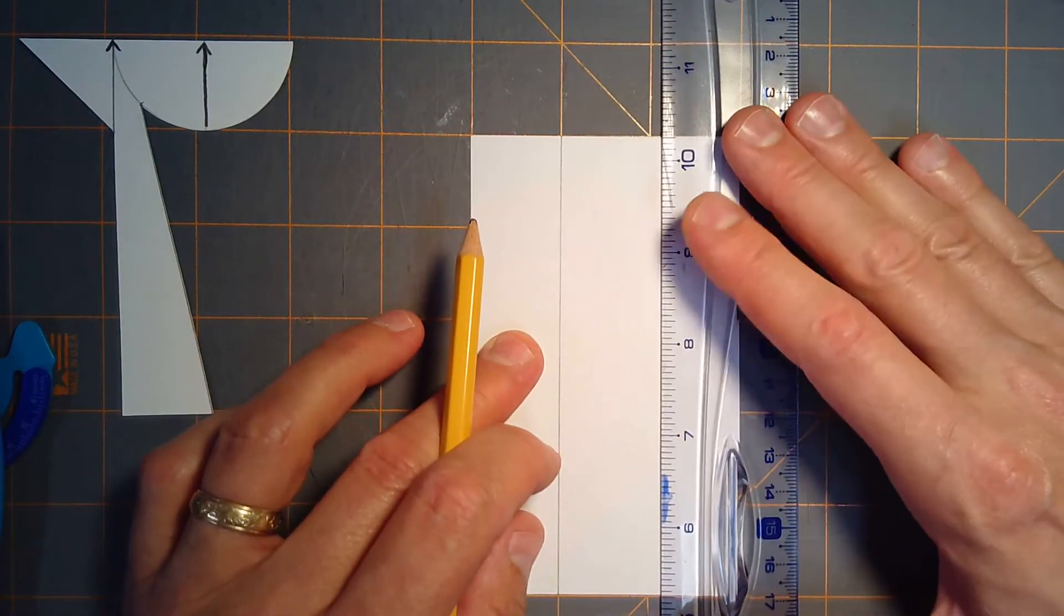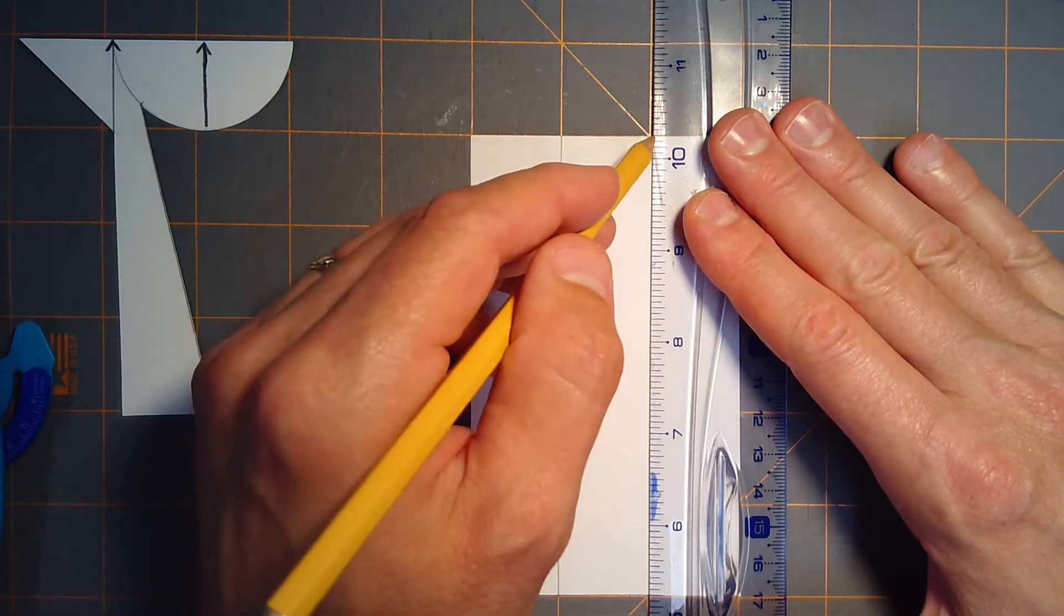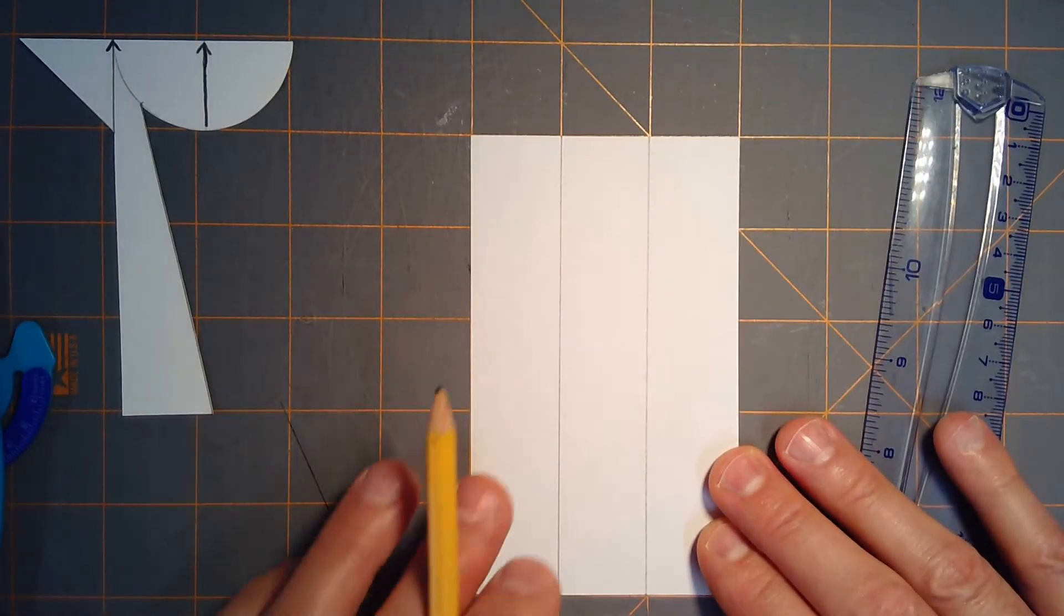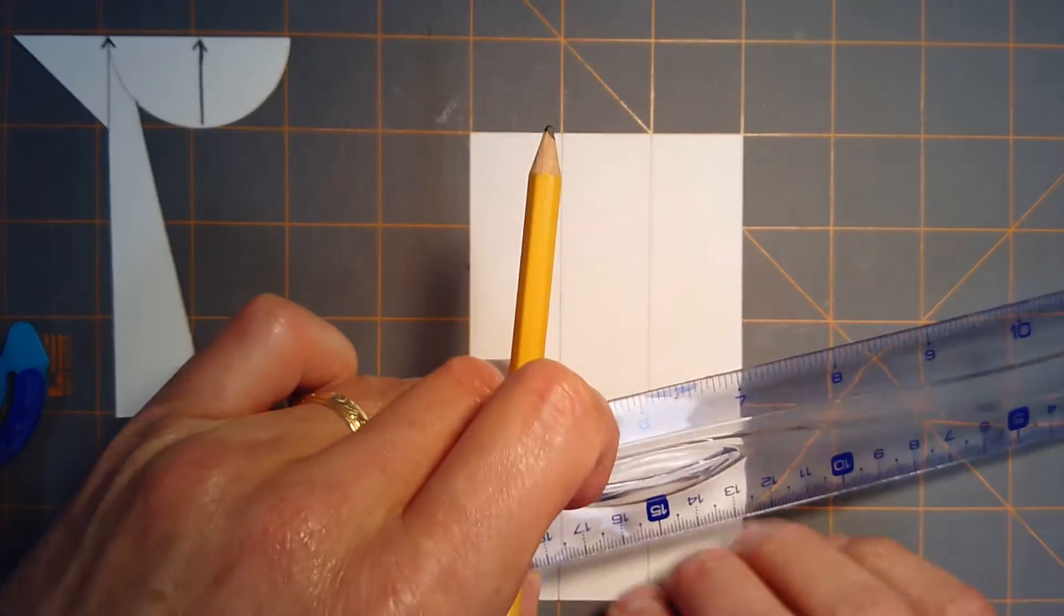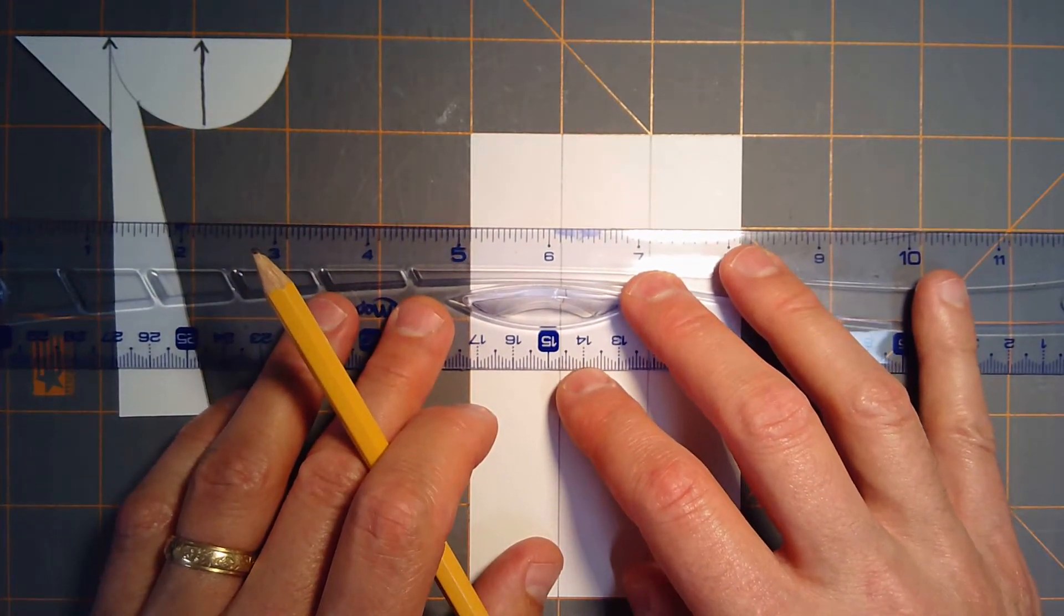All right, so we got that there. Next, we're going to draw a horizontal line one inch from the top of the card.